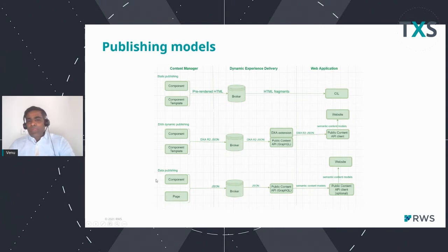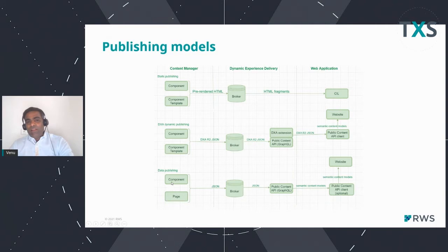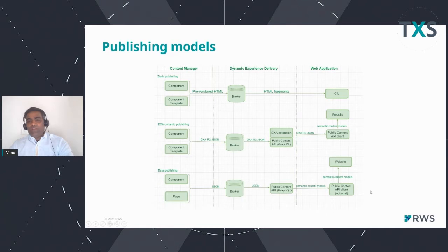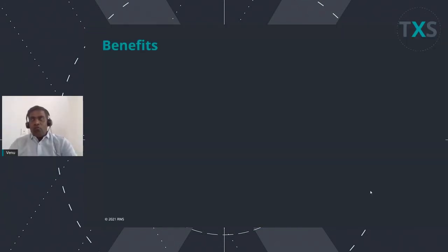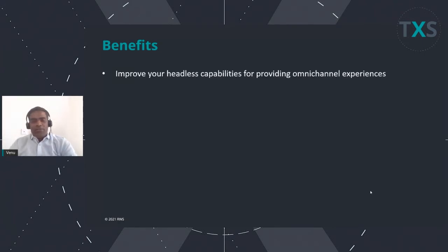The new one introduced is data publishing — that's a new concept. The first difference you might notice from the previous two models: a component template is mandatory to publish with either static publishing or DXA dynamic publishing. But with the new model, you don't need a component template. You can directly create a component and publish it, or create a page and publish it. When you publish it, it will be stored as a JSON output into the broker database. Using the Public Content API with GraphQL, you can pull that content and build your website. The benefit is improved headless capabilities for omnichannel delivery.